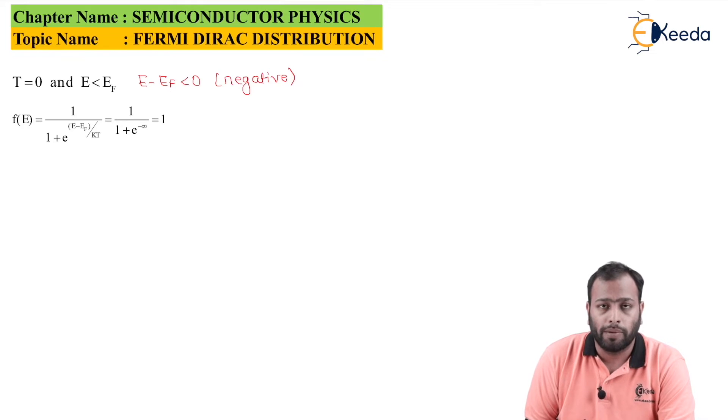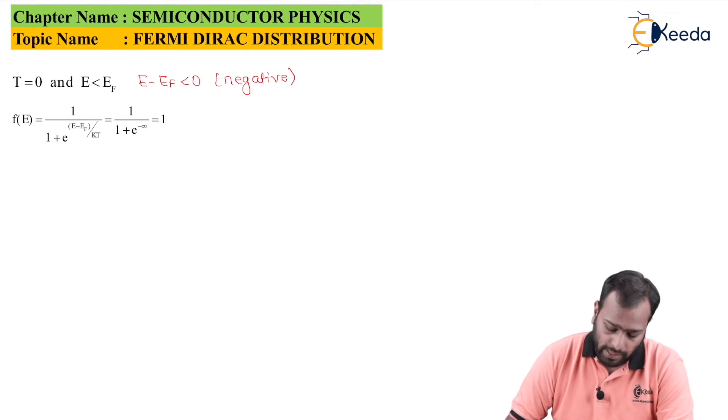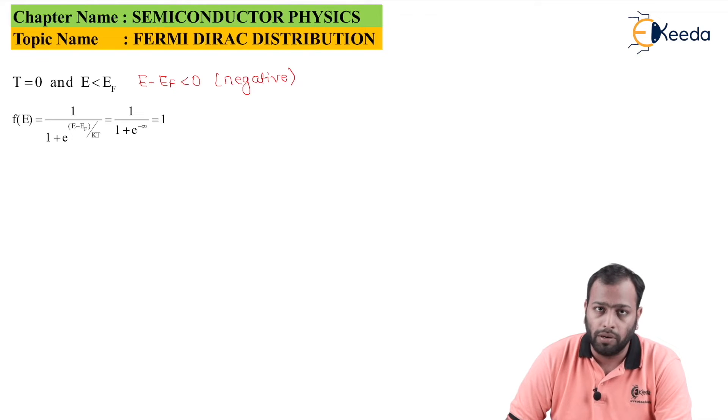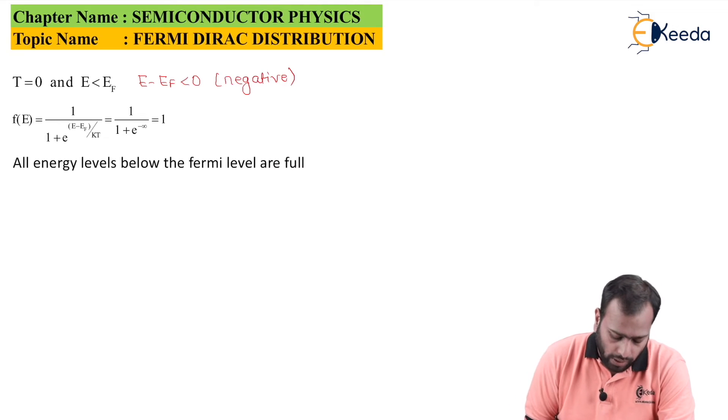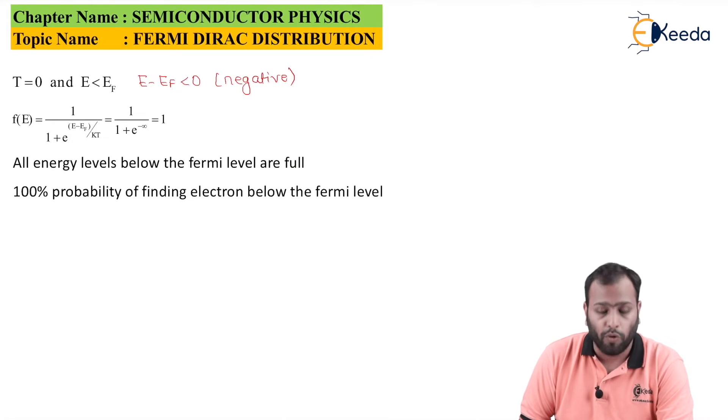We all know that e raised to minus infinity is nothing but 0, because it is 1 upon e raised to infinity, and hence the value is 1. What does this mean? This means that all the energy states below the Fermi states are completely filled with electrons, or I can say all the energy levels below the Fermi level are full. If they are full, there is 100% probability of finding the electron below the Fermi level.